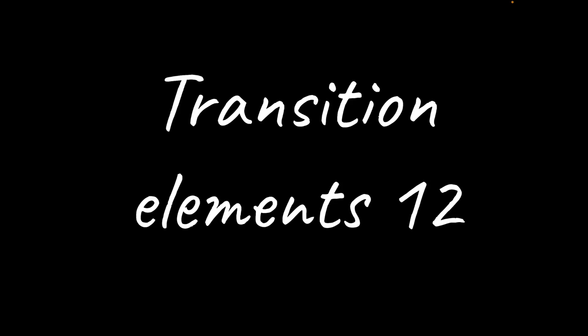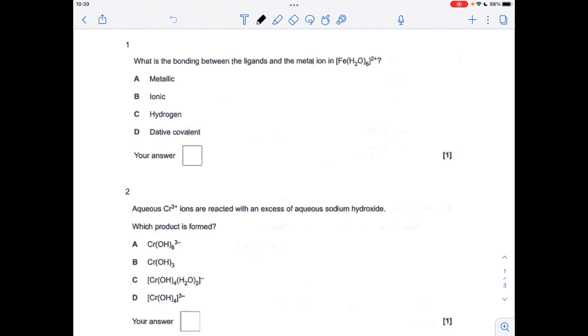Question one: what's the bonding between the ligands and the metal ion in that complex ion of iron? It's dative covalent, so D. Coordinate bonding is the other name for it, so that's where the ligand supplies or donates a pair of electrons to bond to the central transition metal ion.